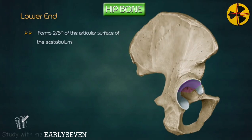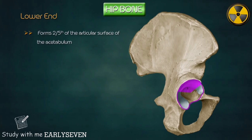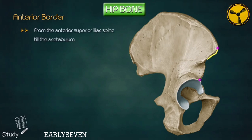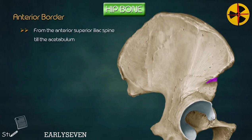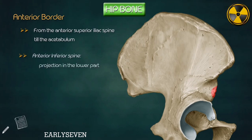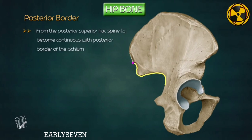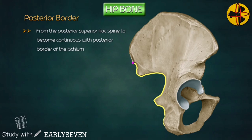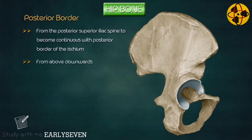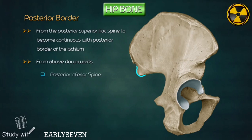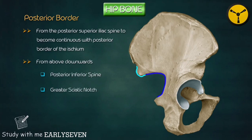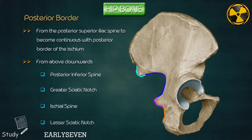Lower end. It is smaller and forms about two-fifths of the articular surface of the acetabulum. Anterior border extends from the anterior superior iliac spine till the acetabulum. A small notch is present just below the spine for the lateral cutaneous nerve of the thigh. The anterior inferior spine is a projection in the lower part. The posterior border extends from the posterior superior iliac spine to become continuous with the posterior border of the ischium, presenting — from above downwards — the posterior inferior spine, greater sciatic notch, ischial spine, and lesser sciatic notch.